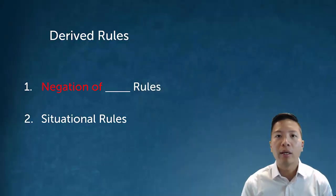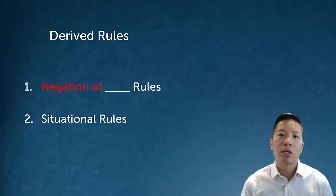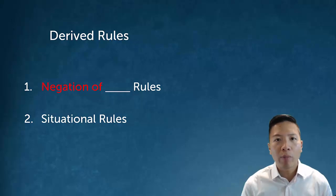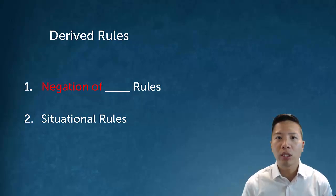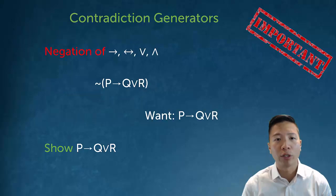Derived rules are theorems, but I like to divide them up into two types. The first is negation rules, and the second are situational rules. I'm really going to focus on the negation rules, but we'll see that situational rules are helpful every once in a while — hence the name situational.